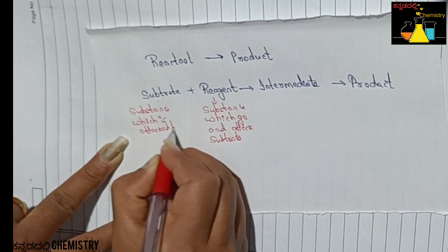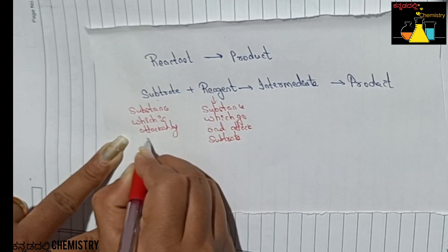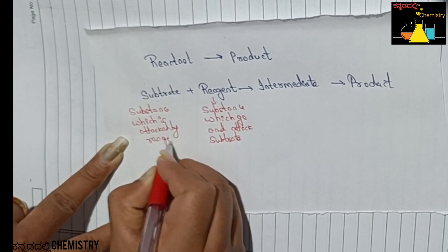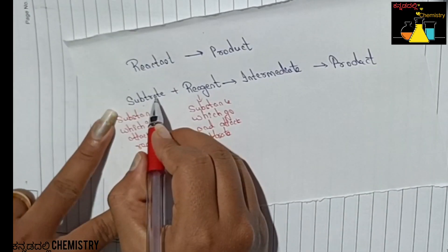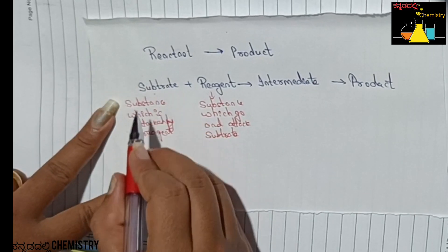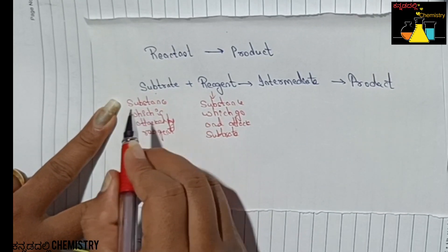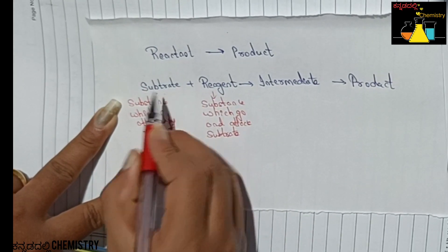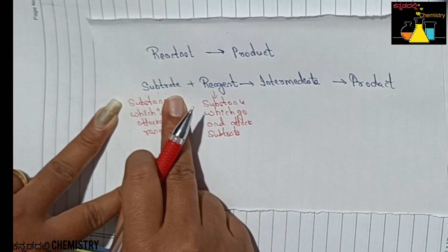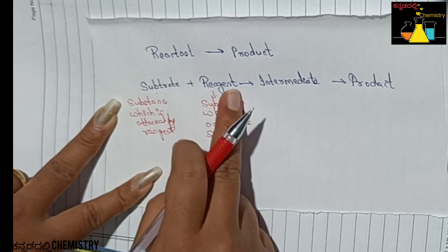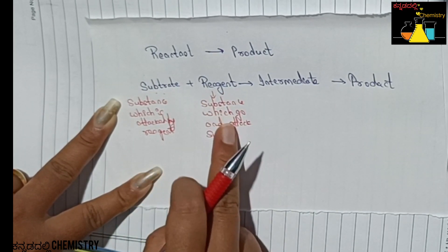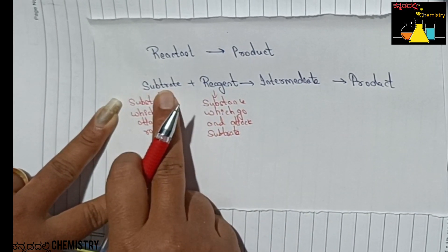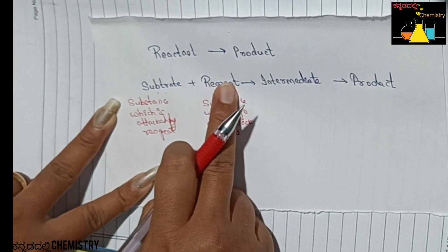The substrate is the species which is attacked by the reagent. The reagent attacks the substrate. This is the basic framework: substrate plus reagent gives product.